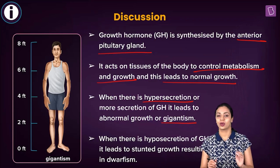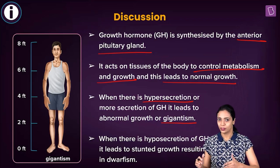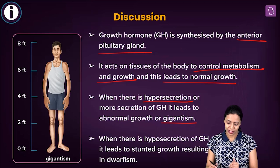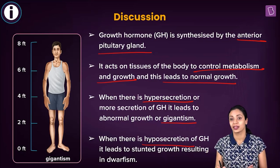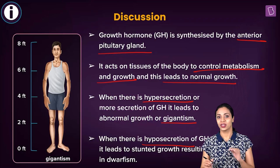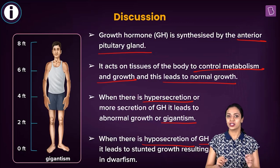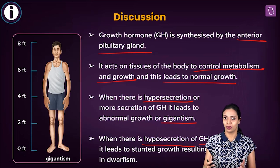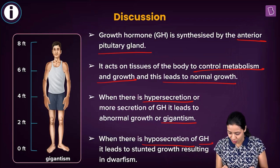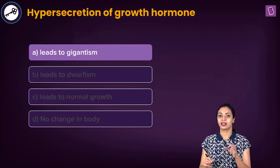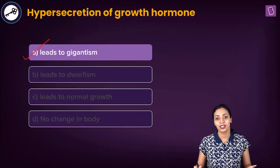One notable feature of people with gigantism is their extreme height compared to normal individuals, though there are various other symptoms as well. Conversely, when there is hyposecretion — less than normal secretion — of growth hormone, it leads to stunted growth and dwarfism, noticeable by short stature. Since the question asks about hypersecretion of growth hormone, the correct answer is option A: it leads to gigantism.